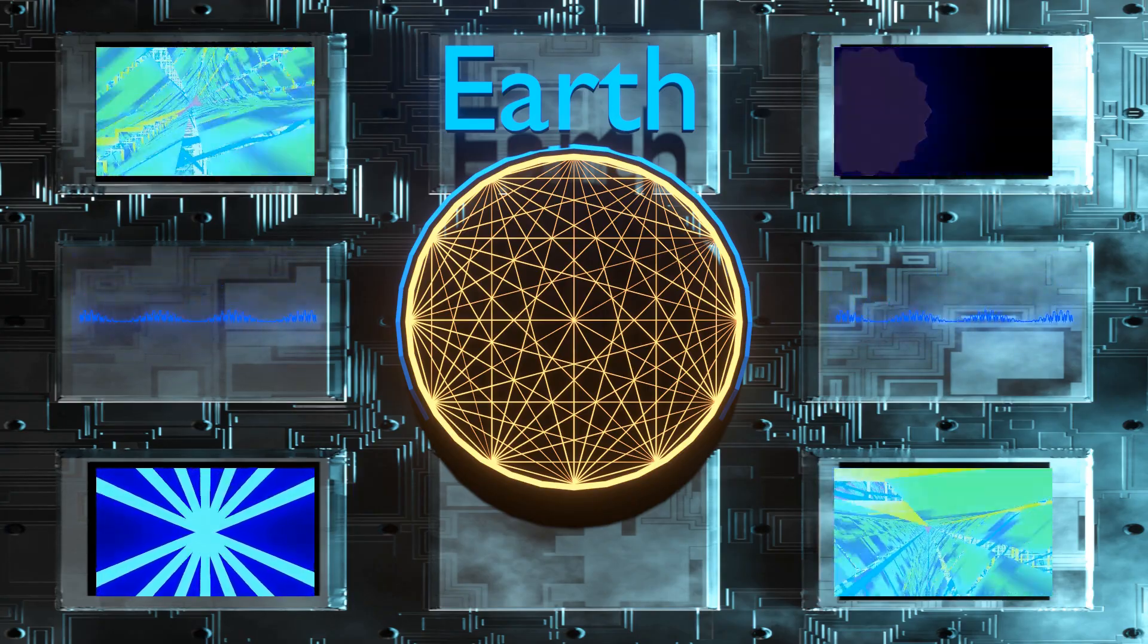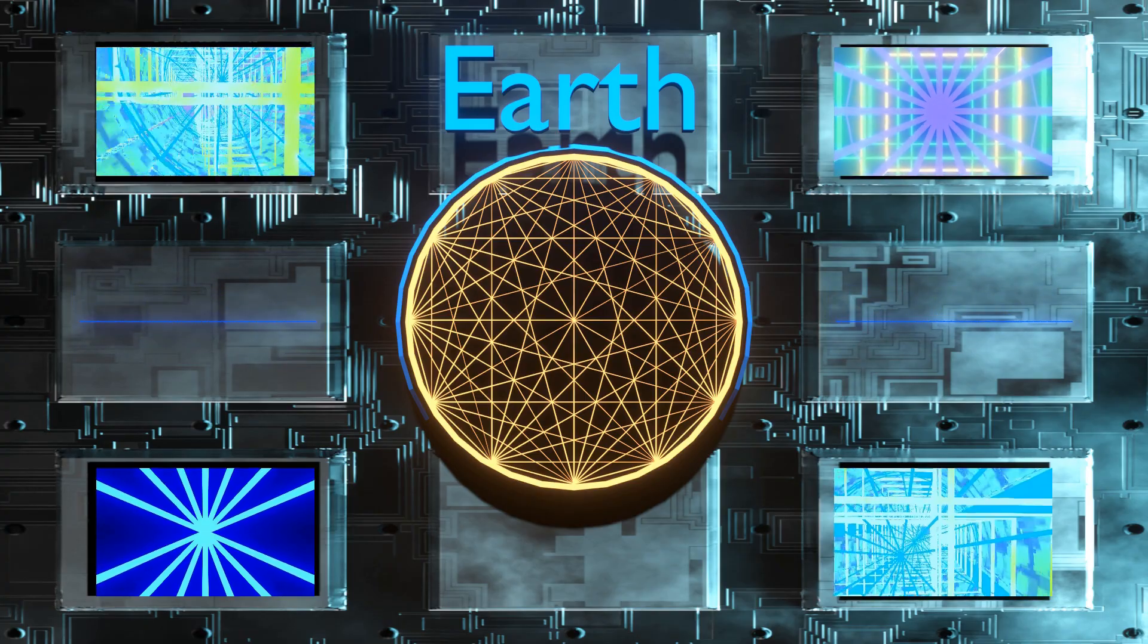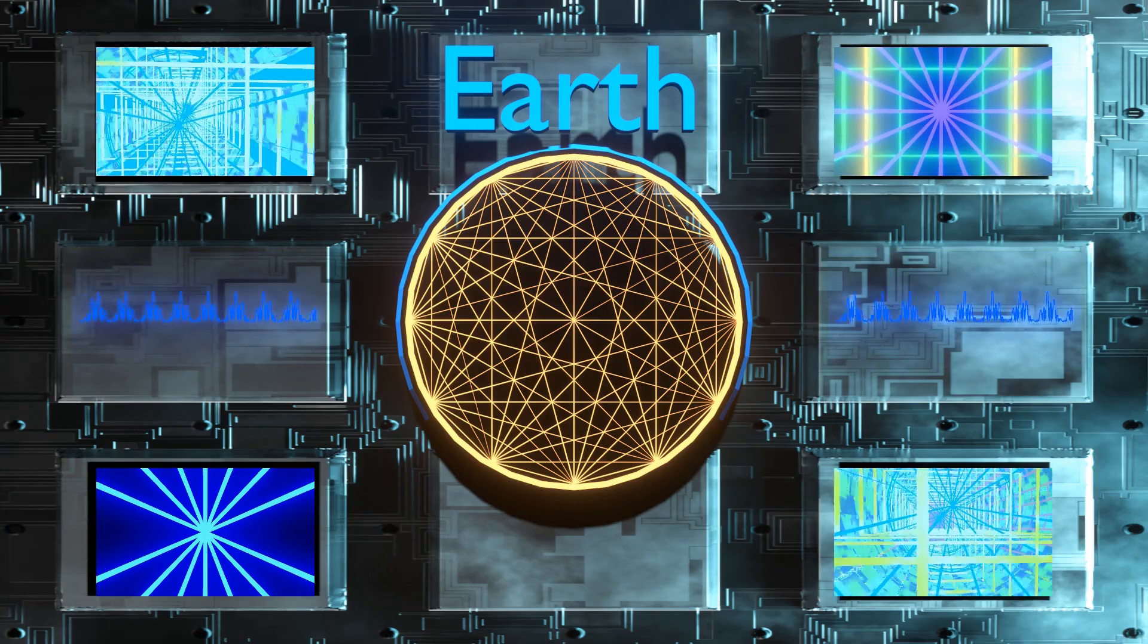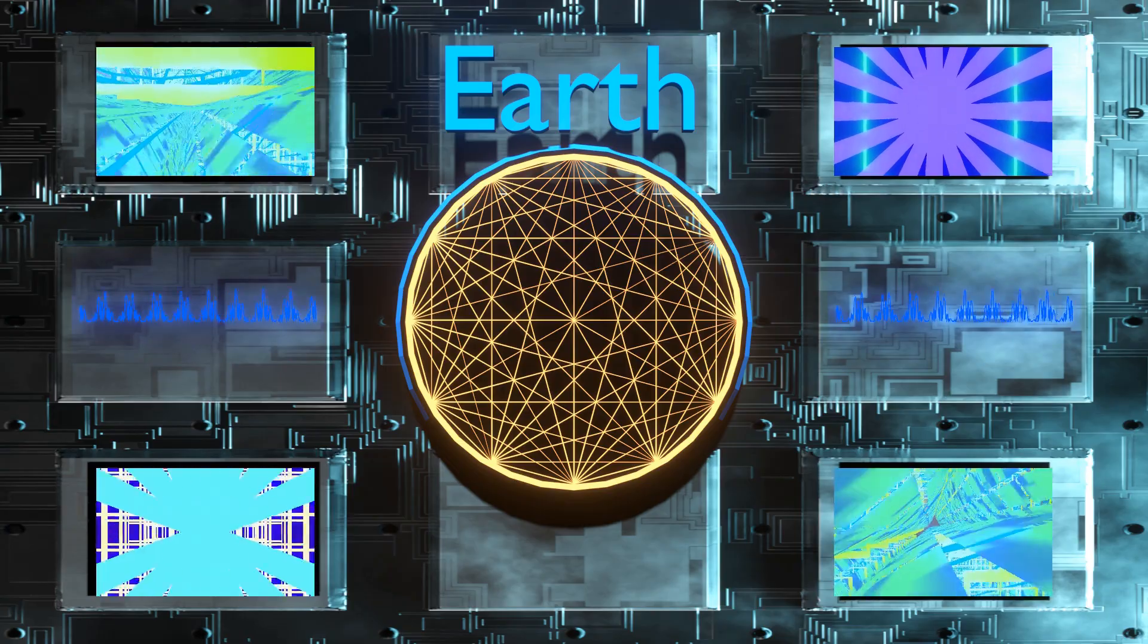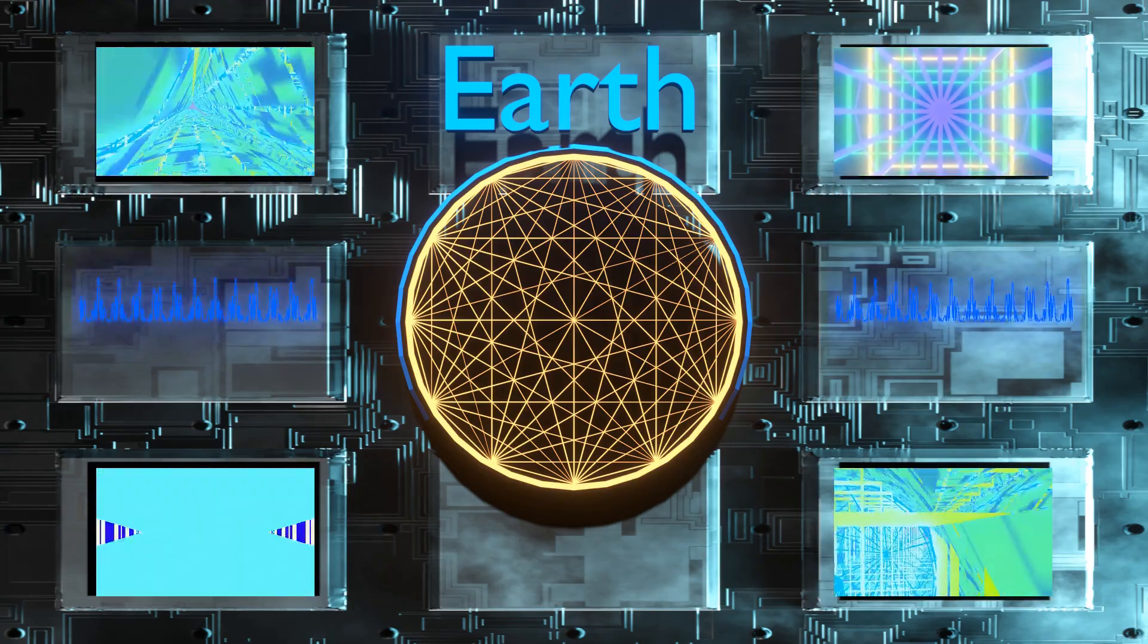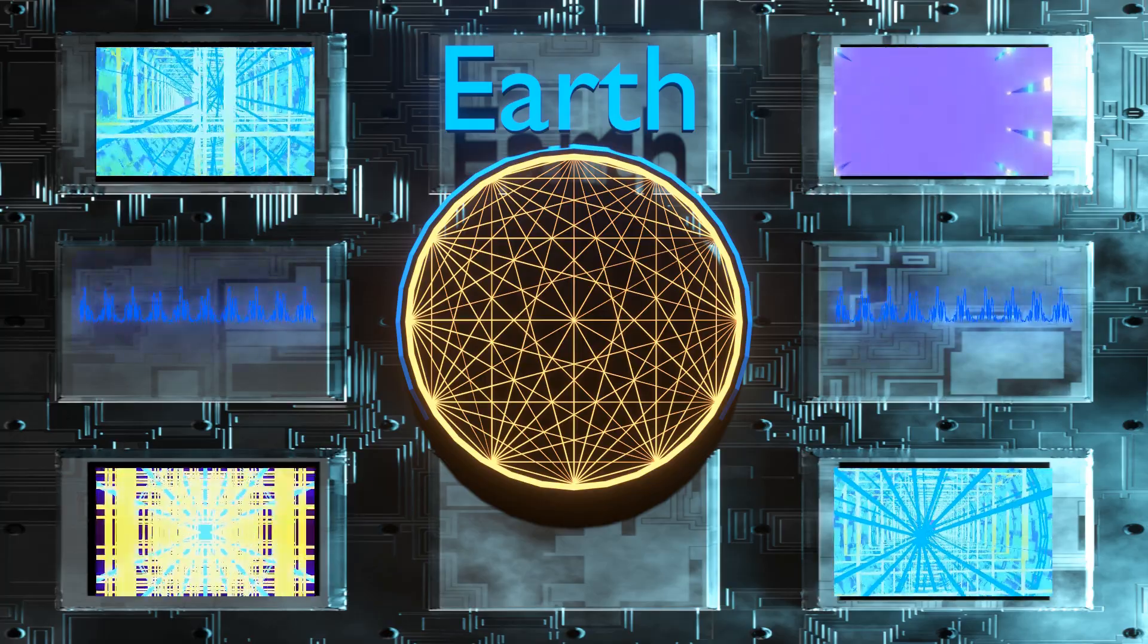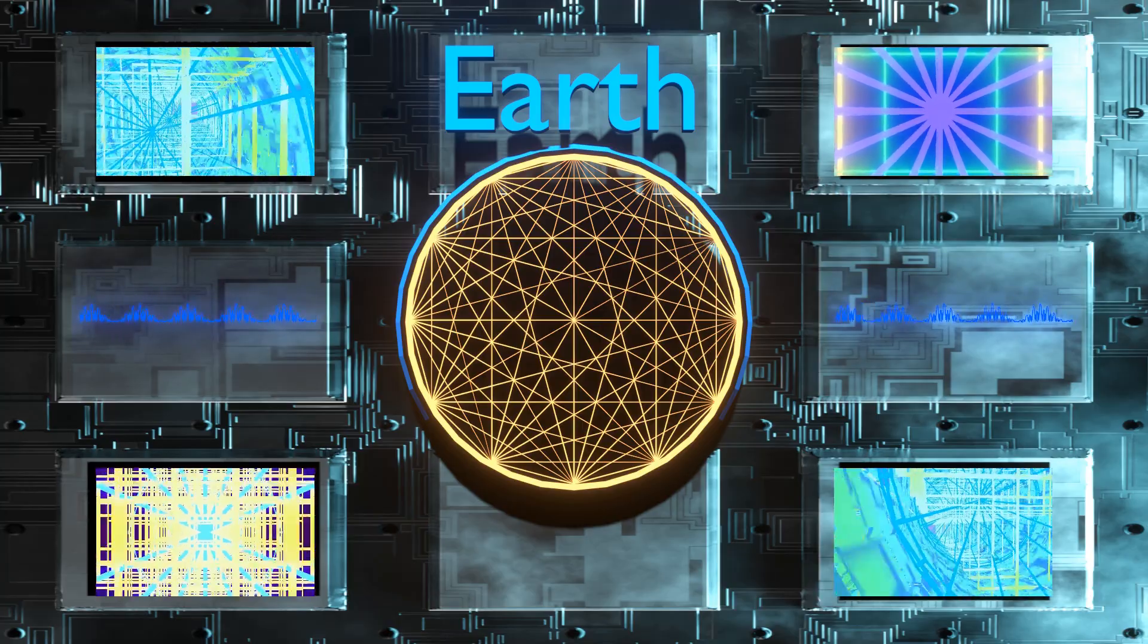In Greek mythology, the concept of primordial chaos is central to the creation narrative. Hesiod's Theogony describes chaos as the first entity to exist, a gaping void that gave rise to Gaia (Earth), Tartarus (the underworld), and Eros (love). This chaos is not simply a void but a formless, unordered state that precedes creation. From it, the structured universe gradually takes shape as different forces and deities emerge.